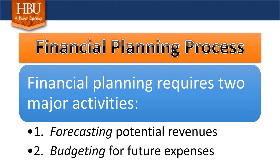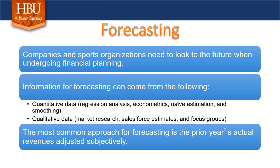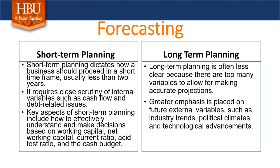Financial planning involves two key processes: forecasting potential revenues and budgeting for future expenses. The first step is forecasting, where companies and sport organizations look to the future by utilizing both quantitative and qualitative data. Forecasting can be thought of in two ways — short-term, usually encompassing less than a two-year range, and long-term, which is anything greater than two years.